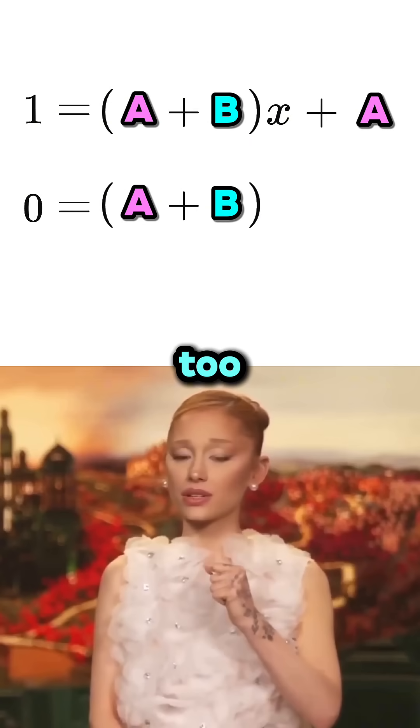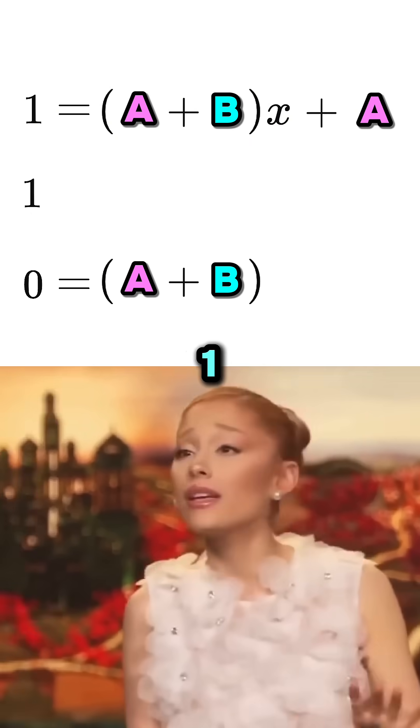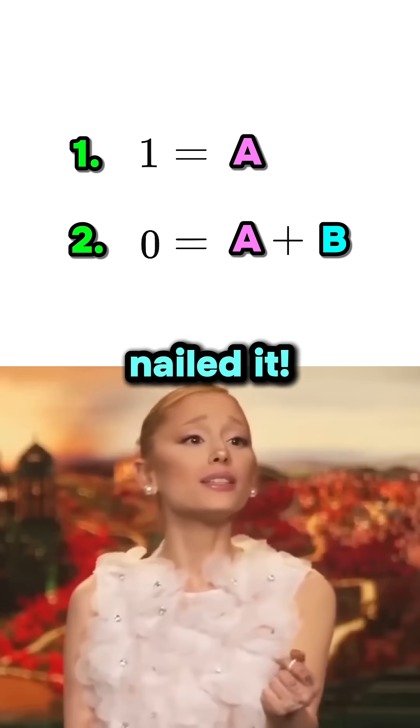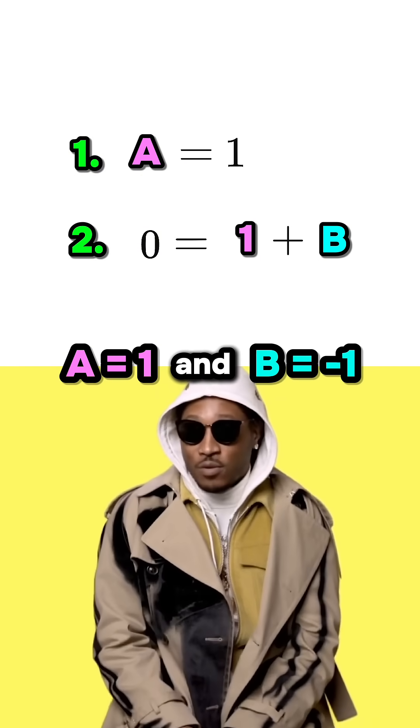Now if we compare the non-X terms too, it looks like on the left we have this one and on the right we have this A. Yo, is this gonna be a simultaneous equation? Nailed it! So A equals one and therefore B equals minus one.